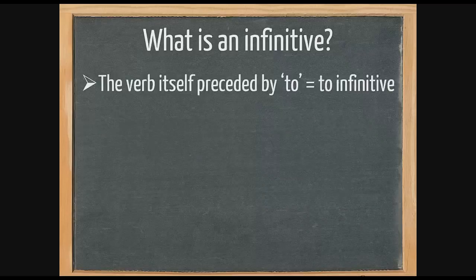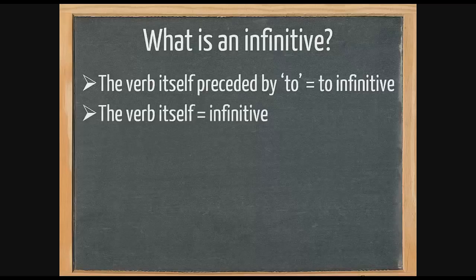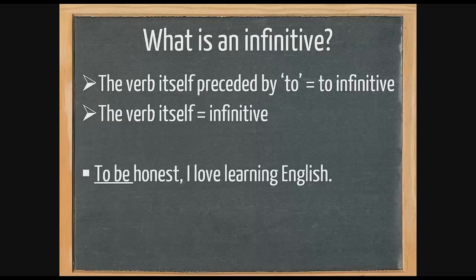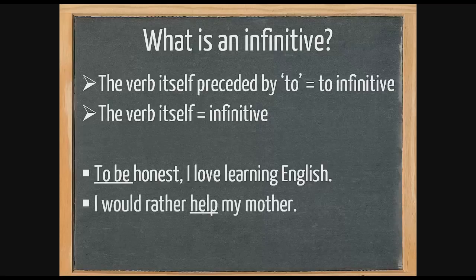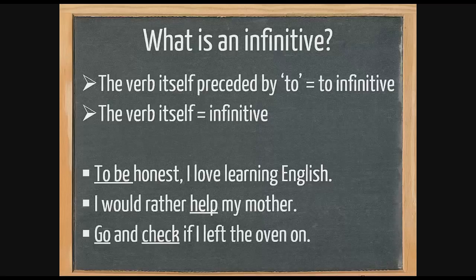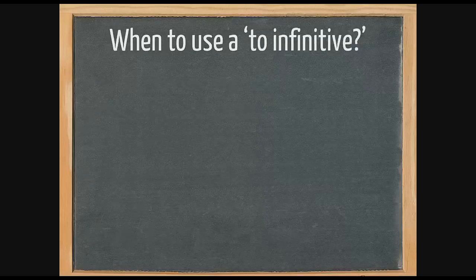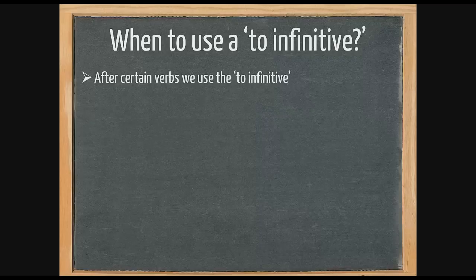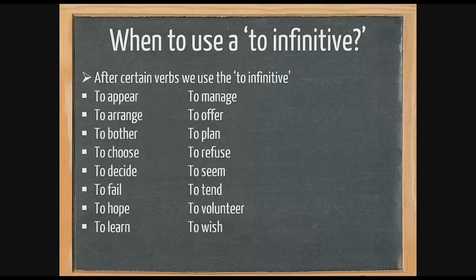An infinitive is the verb itself, which can be preceded by 'to' — giving us the to-infinitive — or used alone as the bare infinitive. For example, 'To be honest, I love learning English' uses the to-infinitive. 'I would rather help my mother' uses the bare infinitive. 'Go and check if I've left the oven on' — 'go' and 'check' are both bare infinitives.